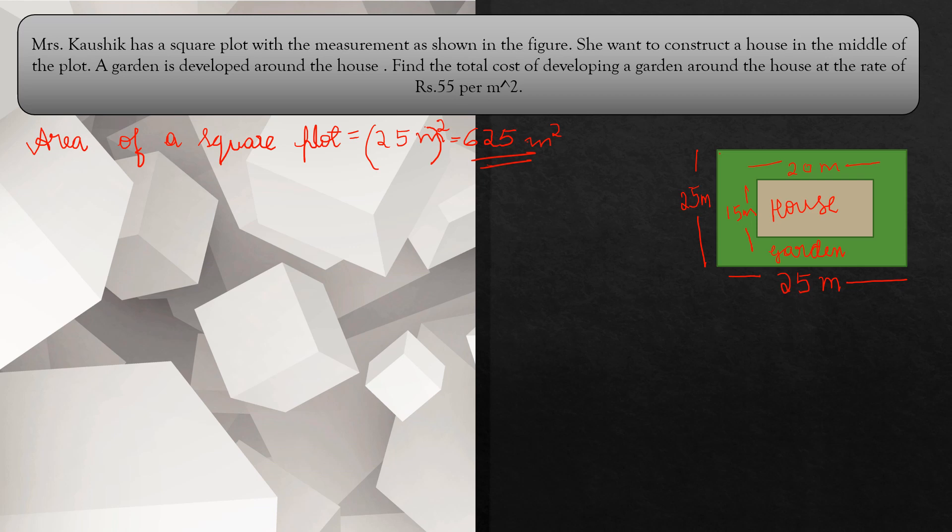She wants to construct a house in the middle of the garden. A garden is developed around the house. Find the cost of developing a garden around the house at the rate of Rs. 55 per meter square. So 1 meter square area costs Rs. 55, and we have to find the total cost of developing the garden.